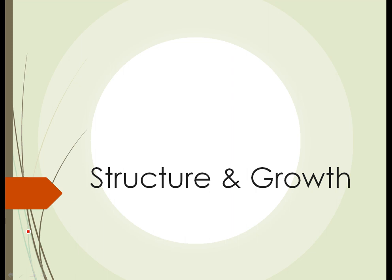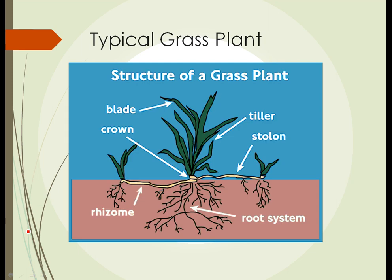Structure and growth of grass plants. Here we see a diagram of a typical grass plant. Grass plants are somewhat different than other plants because their growing point is called the crown, and it is typically low to the ground, right at the surface of the soil. That's the reason that on a lawn you can mow the grass repeatedly and not kill it.